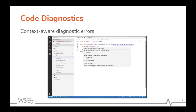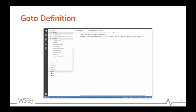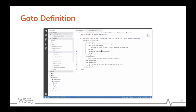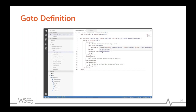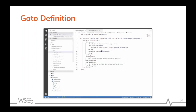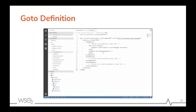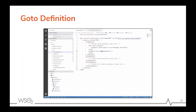Regarding code definition in the context of our VS Code extension: the code definition feature helps you when developing configurations that include mediators such as sequences and endpoints, where you implement the definition in a separate artifact file and refer to it from another file. If you want to navigate to a particular definition, you'll find this feature very useful during development.